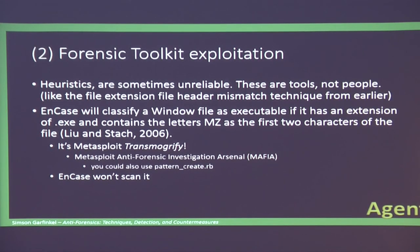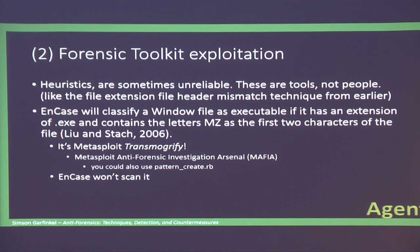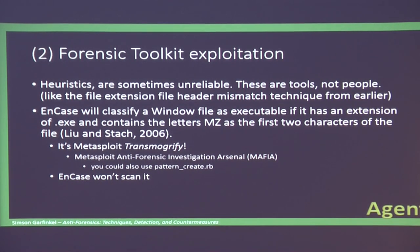That thing I told you about — matching file extension to file header — that's something called heuristics in forensic tools, and they are sometimes really unreliable. NCASE is a big software package that has an exploit against it: if it's a .exe and the first file letters are MZ, it'll think it's actually what it's supposed to be. That's why Metasploit's Meterpreter does it. NCASE won't scan it because it'll think it's a binary — it'll say 'holy crap, this might be malware, we don't want to look at it.' So they won't find your evidence there.